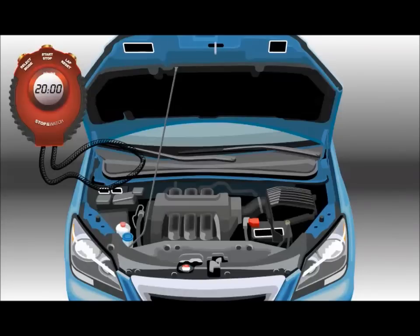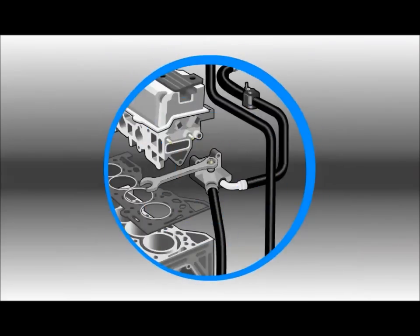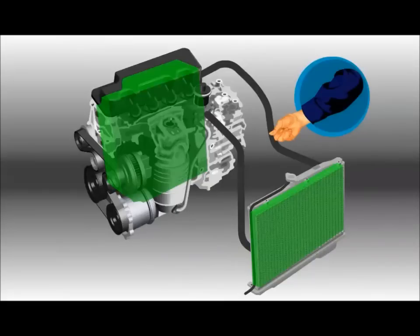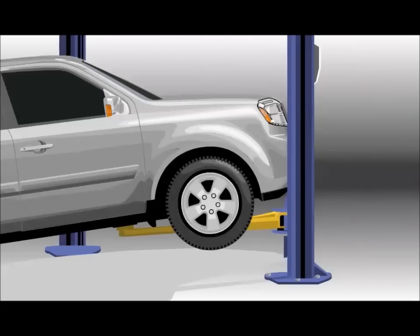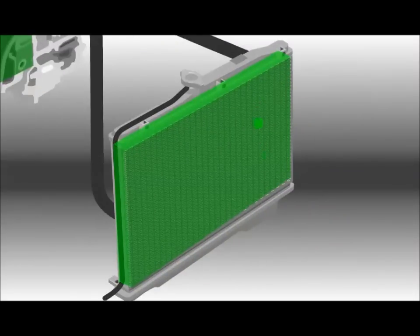After the engine cools back down, check all the bleed valves for air. In some cases, pulling up on the upper radiator hose or lifting the front of the car may help move air bubbles into the expansion space.